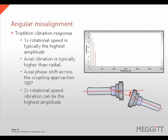Angular misalignment is characterized as having a higher 1 times rotational speed vibration, with the highest amplitudes often in the axial direction. The phase shift across the coupling should occur in the axial direction, and the analyst must consider the orientation of the transducer when collecting axial phase readings. While 1 times is the most common response to angular misalignment, it is not uncommon to find a 2 times vibration being highest in amplitude, making it difficult to distinguish from offset misalignment based on spectral data alone.